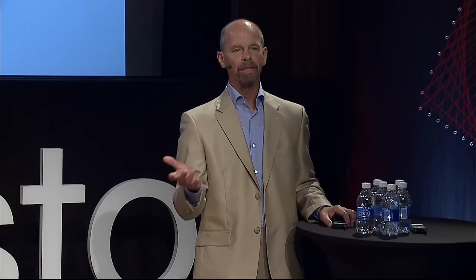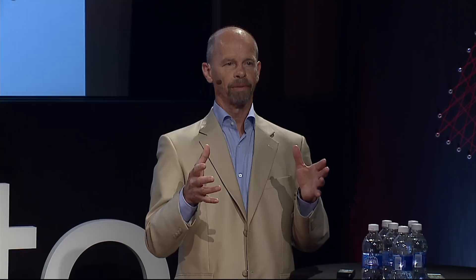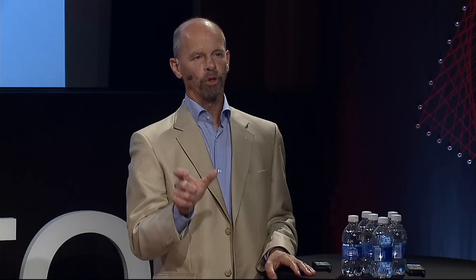We harvest this product by standard dairy procedures — you milk the animal. This is a milking parlor: you put some feed in there, the animal walks in, and you milk it. Of course, it now takes two people to milk a goat — one person to milk the goat and one person to fill out the paperwork, because we're collecting a drug. This milk is then taken and put over a standard purification process used in the industry, and in the end we get a pure drug that's put through clinical trials and was approved. This was the first drug approved using this technology, both in Europe and in the US. More importantly, it allowed us to make a recombinant form of antithrombin so you didn't have to depend on purifying it from blood.